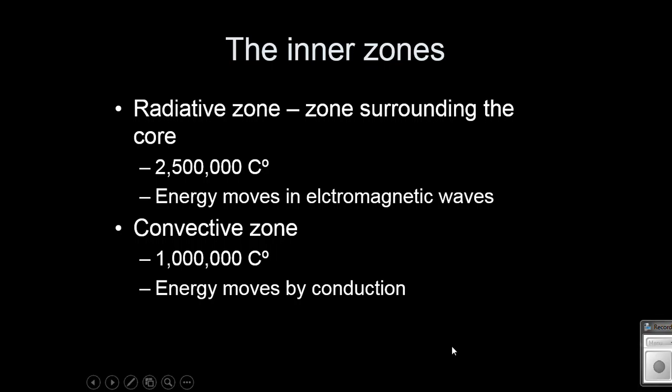Our radiative zone and our inner zones, so this is where it's around the core. When we talk about the different wavelengths of light and what we can see, we know this because we can see different things that are emanating from the sun. We can't actually see the radiative zone or the convective zone because they're underneath the atmosphere. So we have energy that's moving by electromagnetic waves or energy that's moving by convection.